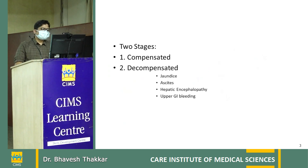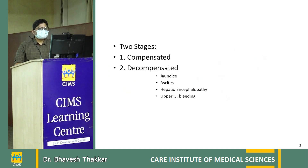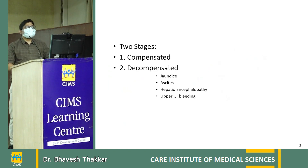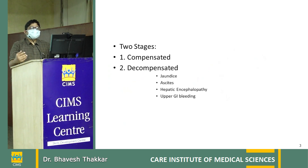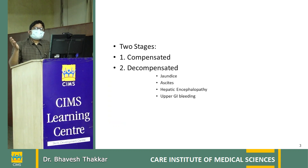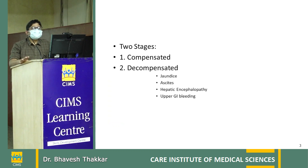There are two stages of liver cirrhosis: compensated and decompensated. Most of the time, when patients are admitted to hospital, they are in decompensated cirrhosis. Compensated cirrhosis is usually detected on ultrasound — patients are asymptomatic and are often detected on health checkups, or may present with fatigue or weakness.